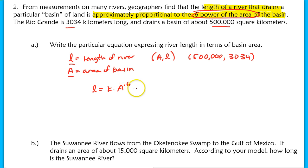Now I have to find the particular equation by finding that K value here. So to find that K value, I need to substitute in this A comma L ordered pair. So I have 3034 equals K times 500,000 raised to the 3/5 power. To isolate K, I would obviously just divide that 500,000 to the 3/5 power, so I have K equals 3,034 over 500,000 raised to the 3/5.